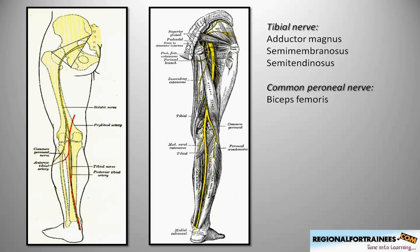Coursing downwards, it lies slightly posteromedial to the lesser trochanter and posterior to the femur. As it passes downwards it comes to lie behind the biceps femoris and subsequently more medially to it. This is the popliteal triangle, whose base is formed by the popliteal crease, the lateral border by the biceps femoris, and the medial border by the semimembranosus and semitendinosus. At this point the sciatic nerve separates into its two individual components — the lateral one being the common peroneal and the medial one being the tibial nerve.